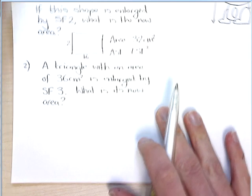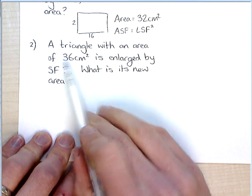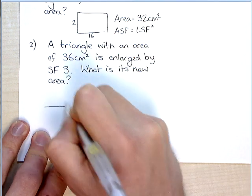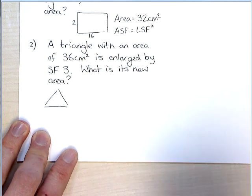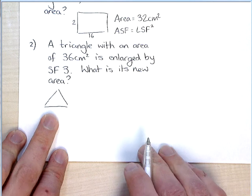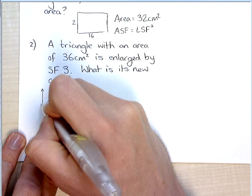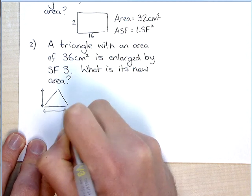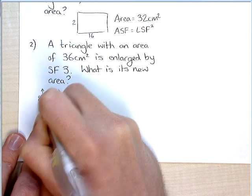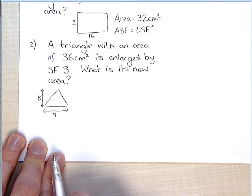Now, this one might really confuse you by the way I'm going to do it, because it's talking about a triangle with an area of 36. So let's draw a triangle. Obviously the triangle formula is a little bit more complicated than the rectangle or square. It's base times height halved. So whatever I make the base and the height, it's got to be halved to get 36. So let's go 9 and 8. So 9 times 8 is 72, and a half of that gives me 36.